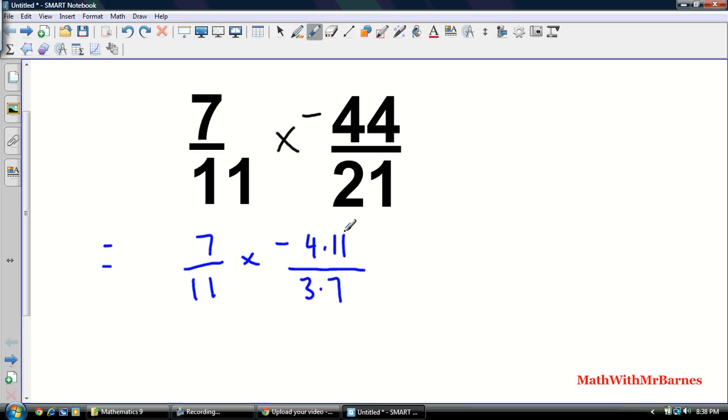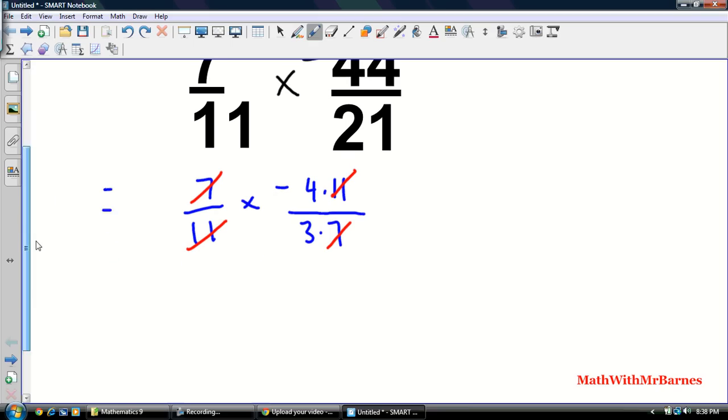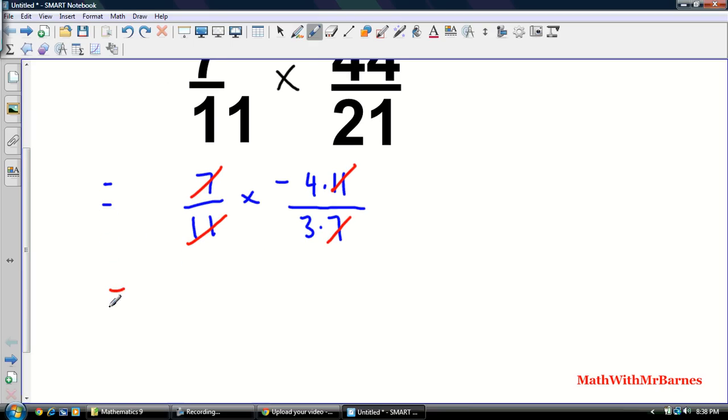And 3 times 7. So if I look here, I could cancel my 7s. Right here, let me get a different color marker. Cancel my 7s. Cancel my 11s. And miraculously, look at the answer which I am left with. I am left with negative 4 over 3.